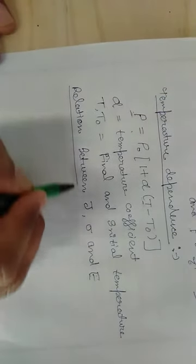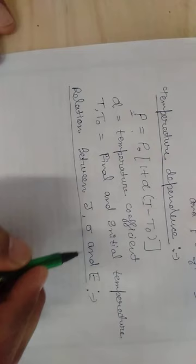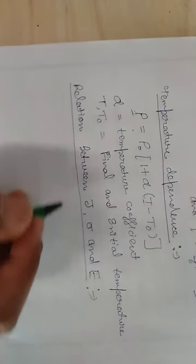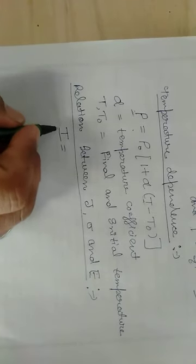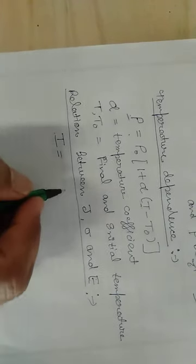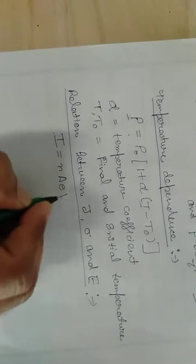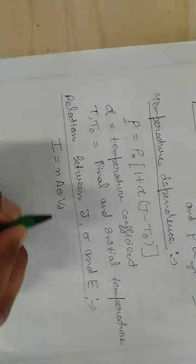So how to find out the relation? We have done the relation in previous topics also, but how can we find out the relation in terms of current? We have derived the relation of current and drift velocity, that is I = N*A*E*V_D - that is the relation between current and drift velocity.